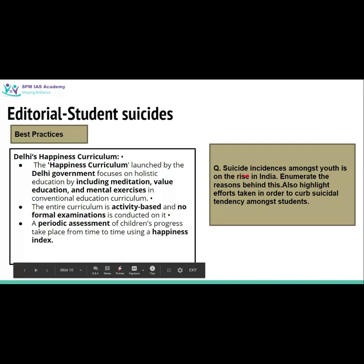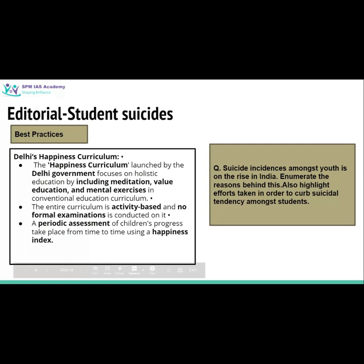A sample question that can be asked from this topic in the mains exam: 'Suicide incidences amongst youth are on the rise in India — enumerate the reasons behind this and also highlight the efforts taken to curb suicidal tendency amongst students.' First, substantiate the statement with data from NCRB — more than 82,000 students have committed suicide in India in the last decade; in 2018 alone, more than 10,000 students committed suicide. Then list the six factors discussed, add your own points, mention the steps taken by the government, and conclude with the Delhi Happiness Curriculum example.